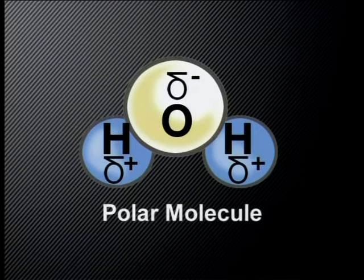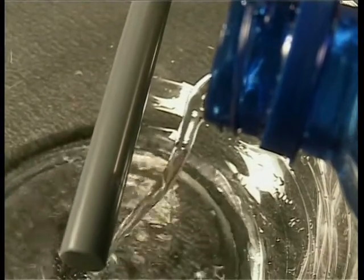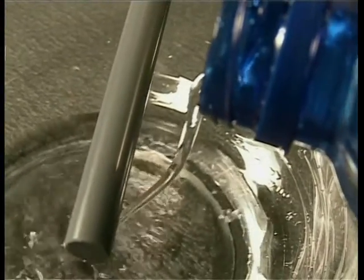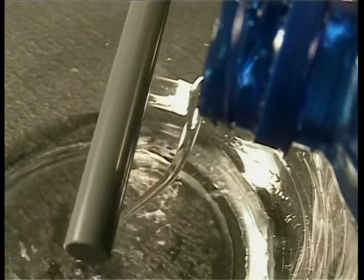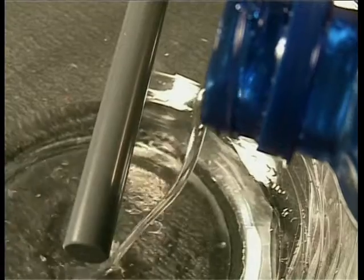When a negatively charged PVC rod is brought close to a stream of water, the positively charged hydrogen ends of the water molecules are attracted to the negatively charged rod, and the stream of water bends towards the rod.